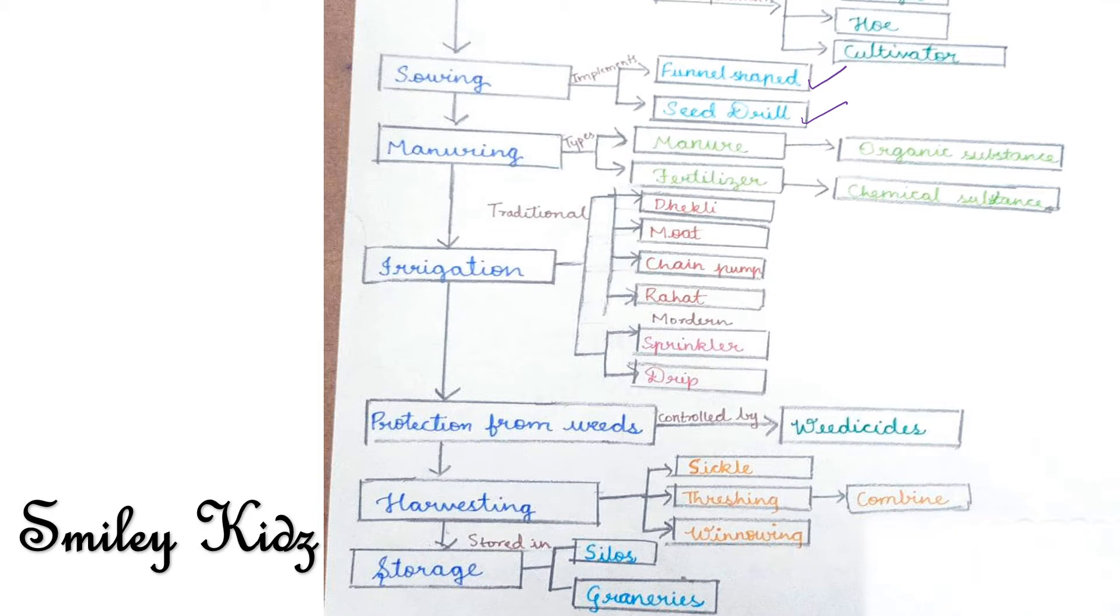Now let's see manuring. The substances which are added to the soil in the form of nutrients for the healthy growth of plants are called manures and fertilizers. Manure is an organic substance, whereas a fertilizer is a chemical substance which is prepared in the factories.